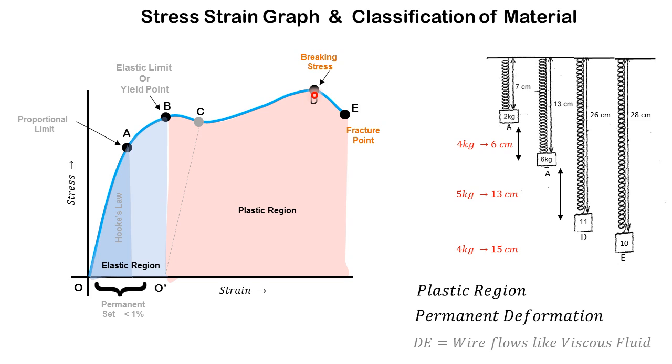D is the breaking stress and E is the fracture point. Between D and E we find that although the stress is reduced, the strain still increases, and also between D and E the wire flows like a viscous fluid.